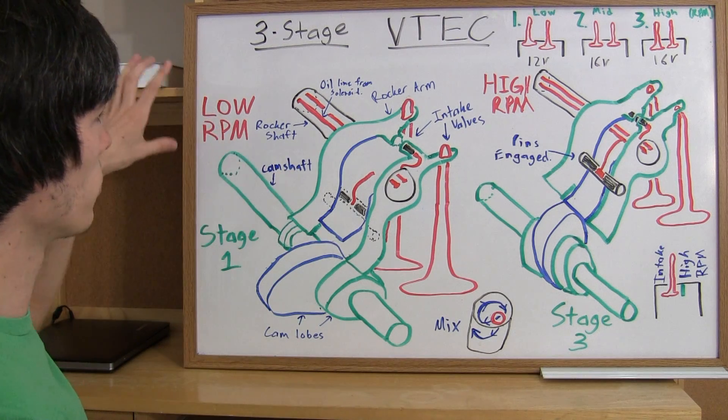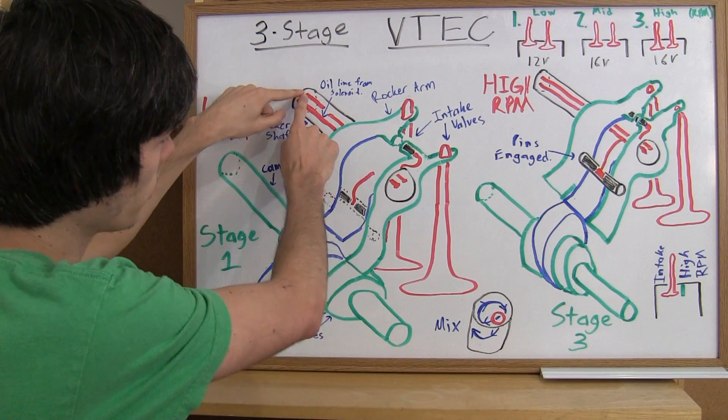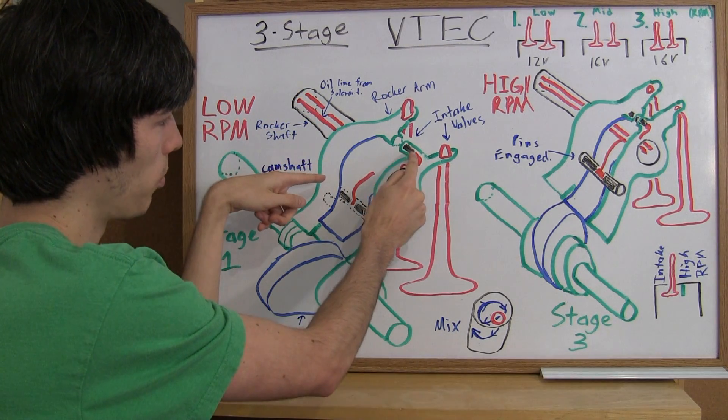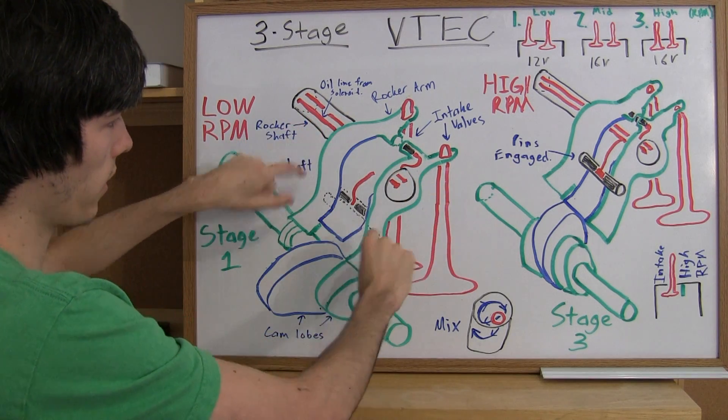Now so what happens when you get to a mid-range RPM? Well as you can see here, you've got this solenoid line with oil. This oil pressure will activate this pin. And this pin will lock these two outer rocker arms together.